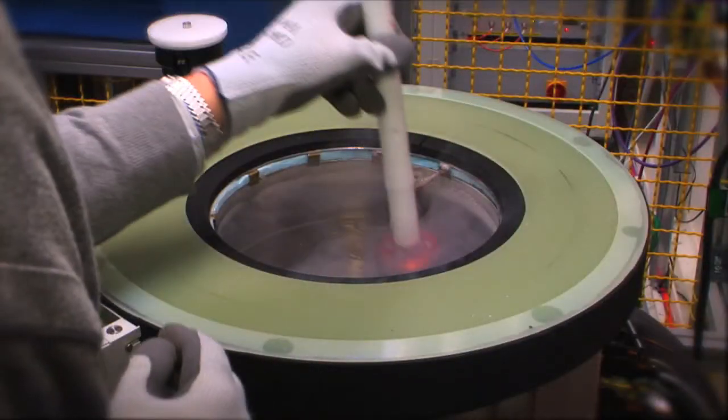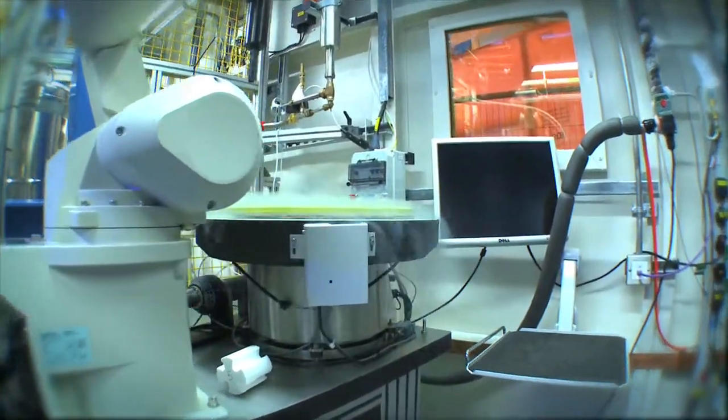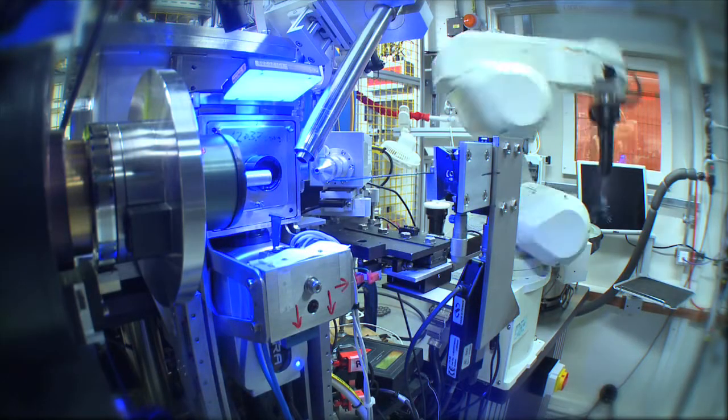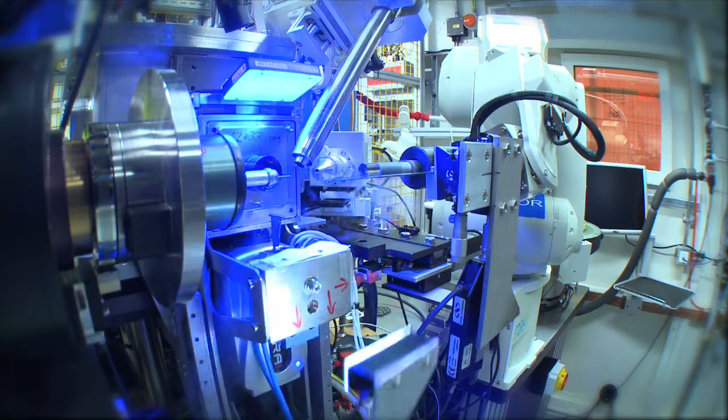Typically our users when they come to the Diamond MX beamlines would have their samples pre-frozen. They bring them in sample pucks. These pucks can then be loaded into the robot DUA, which is a container filled with liquid nitrogen which keeps them at cryogenic temperatures. We then have an automatic sample changer to load their samples, which means that they're as efficient as possible in their experiments.